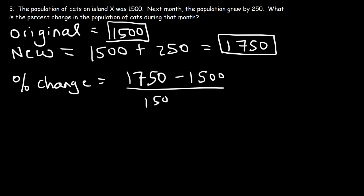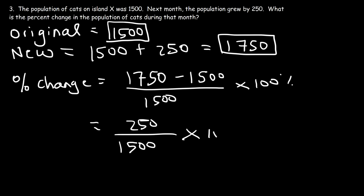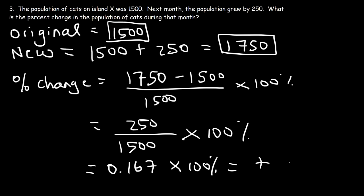Divide 250 by the original value of 1,500. That gives us 0.16 repeating, which I'll round to 0.167. Multiply by 100% and this gives us a percent increase of 16.7%. That's the answer for this problem.